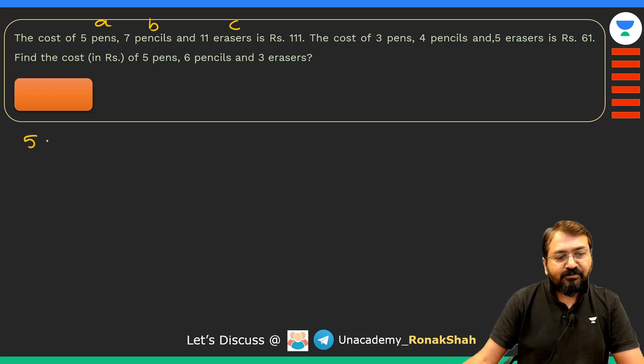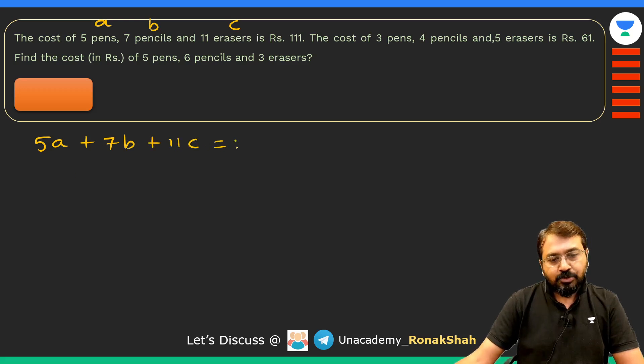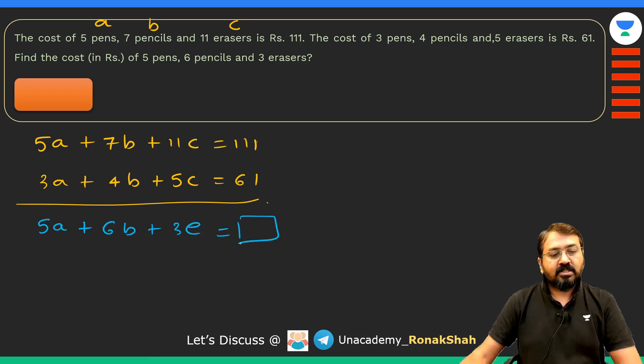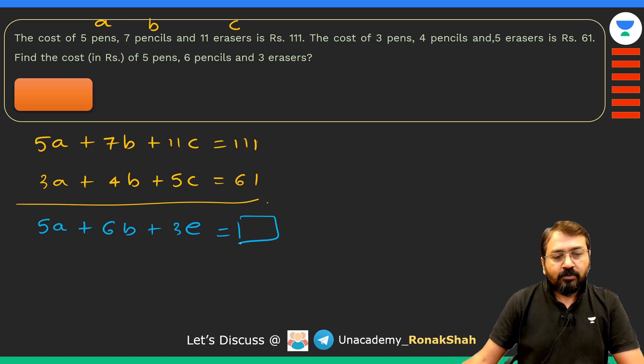Our equation will be 5a + 7b + 11c = 111, and the second equation will be 3a + 4b + 5c = 61. Based on this, we need to find out the value of 5a + 6b + 3c - the cost for these items.